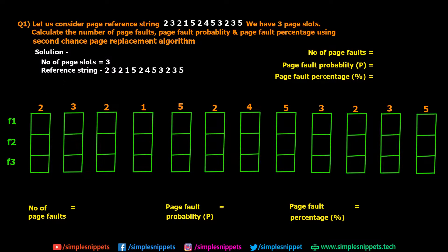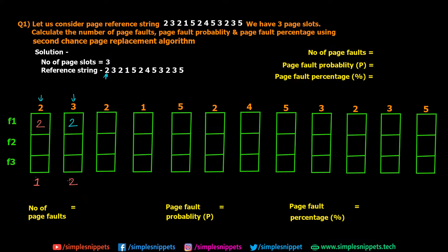Starting with the very first page, page 2 is requested. Memory is empty so this results in a page fault — that's page fault number 1. Page 2 is loaded into memory. Next, page 3 is requested; we only have page 2 in memory, so again this results in a page fault — page fault number 2. Page 3 is loaded into memory as well.